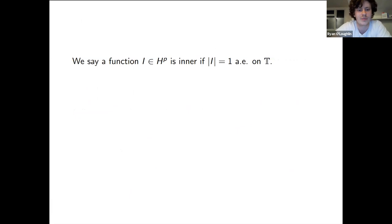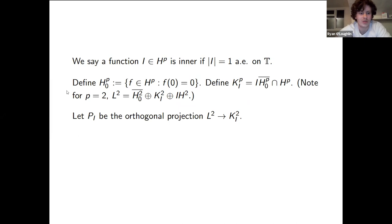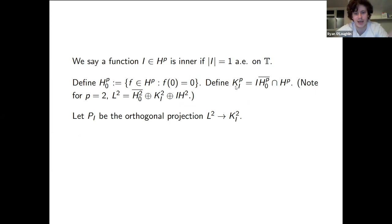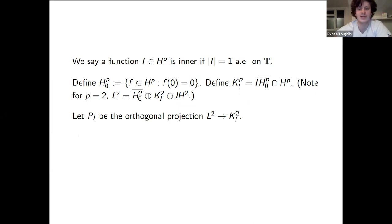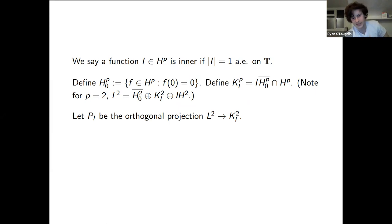We also saw a course on inner functions. Inner functions are defined as functions in H^p which are unimodular almost everywhere on T. I'll define H^p_0 to be the set of all functions in H^p which vanish at 0, and then I'll define a model space. The model space uses the notation K^p_I, and things generalize nicely to the case for p between 1 and infinity.